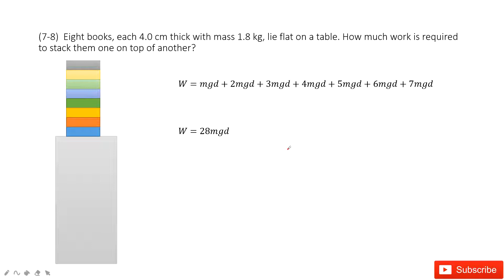This problem is very simple. You can see we have a table and then 8 books. Each one is 4cm thick with mass 1.8 kg, lying flat on a table. We need to stack them one on top of another.